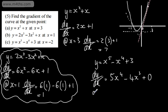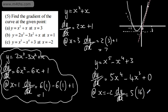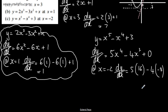So we can say at x is equal to negative 2, dy by dx — the gradient of the curve at that given point — will be 5 lots of negative 2 to the power of 4, which is 16, so that gives 80. And then we subtract 4 lots of negative 2 to the power of 3, which is negative 8, so that gives plus 32. So 80 plus 32, which is 112.